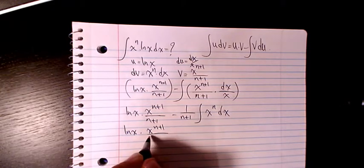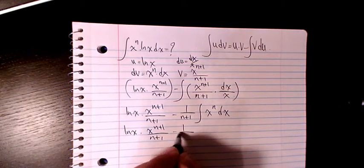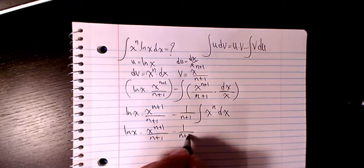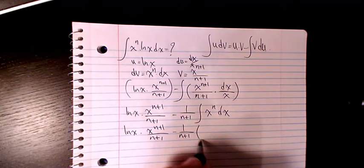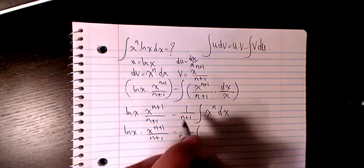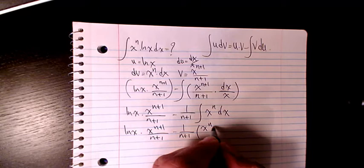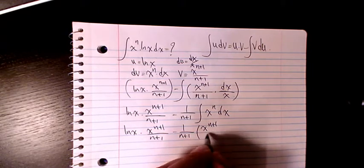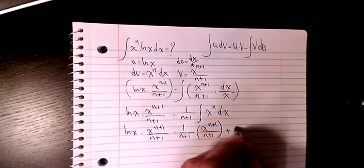So it will be ln x times x to the power of n plus 1 divided by n plus 1, minus 1 over n plus 1 multiplied by the integral of x to the power of n, which gives x to the power of n plus 1 divided by n plus 1, plus C.